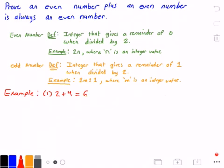So we can see here that it's looking like this is a true statement that an even number plus an even number always equals an even number. So let's go ahead and try to prove this now.